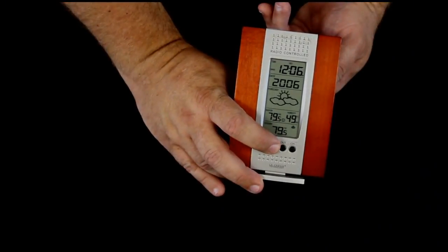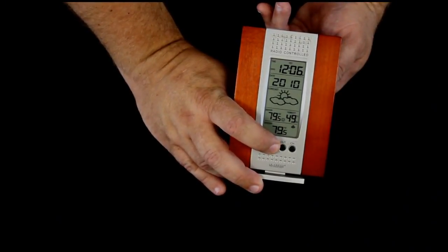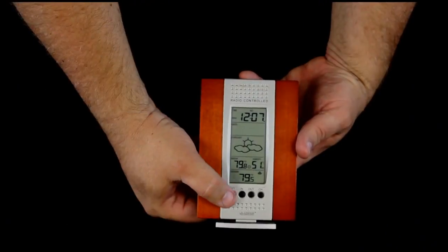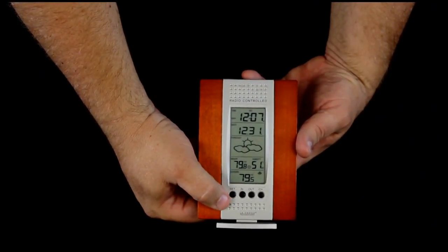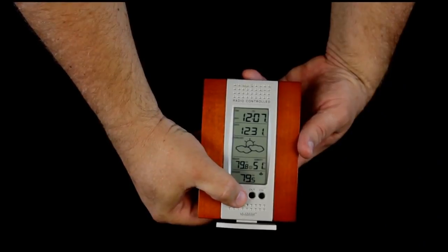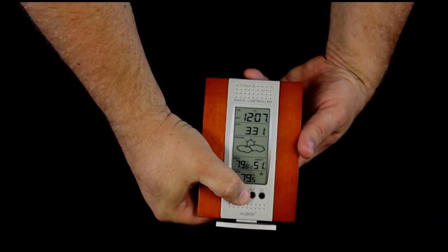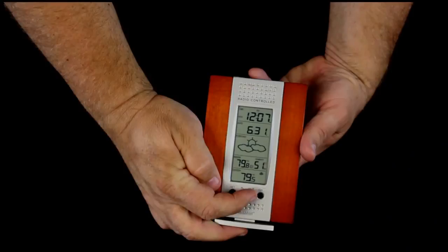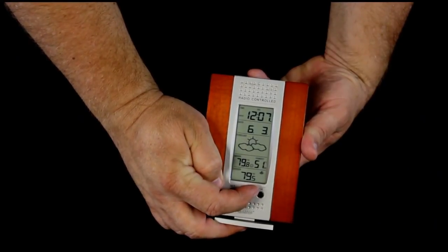Press set once again, we can set our year, the in button, each click one year. After our year, we press set once again, our date is flashing. Pressing the in button changes the month. And pressing the out button changes the day of the month.